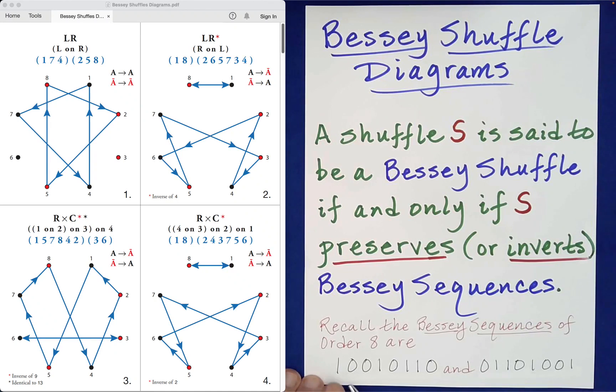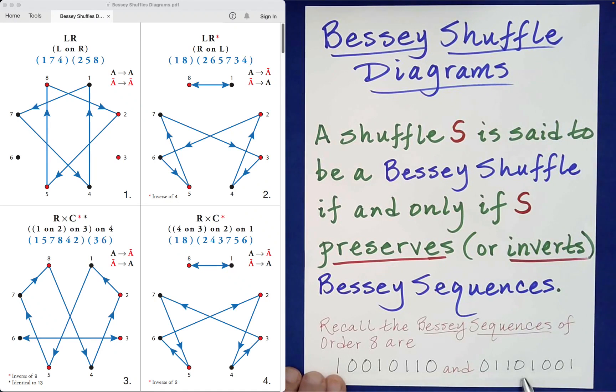Informally, you can just think of them as resulting from the other by switching zeros for ones and ones for zeros.